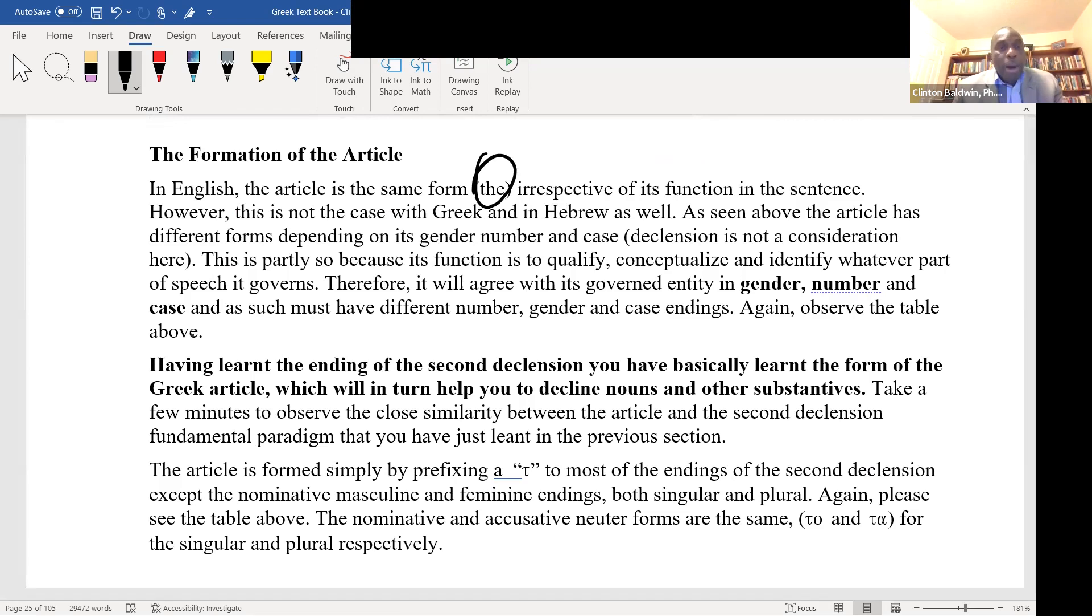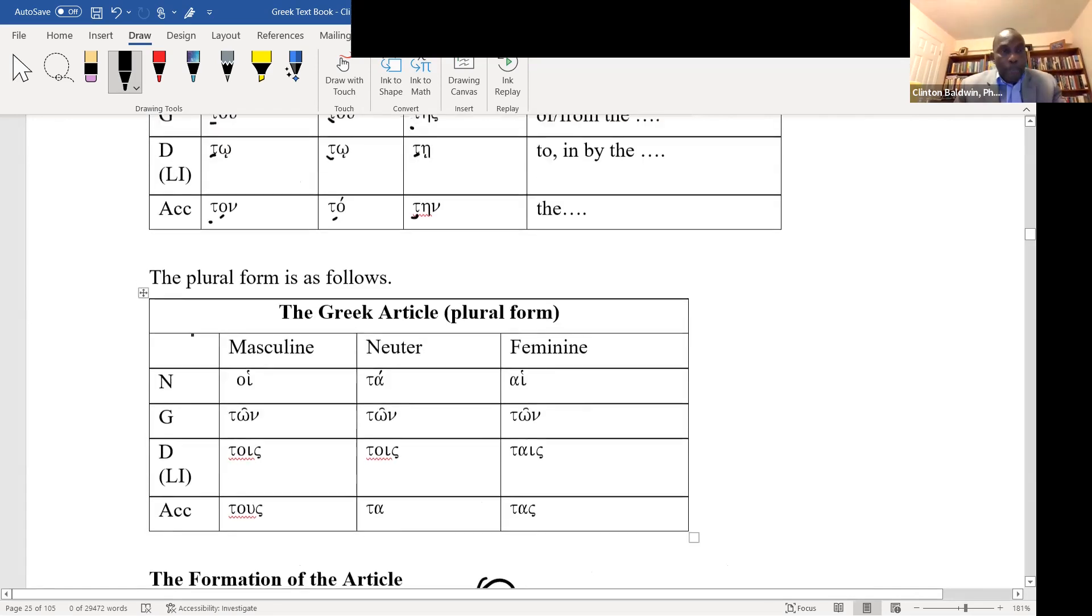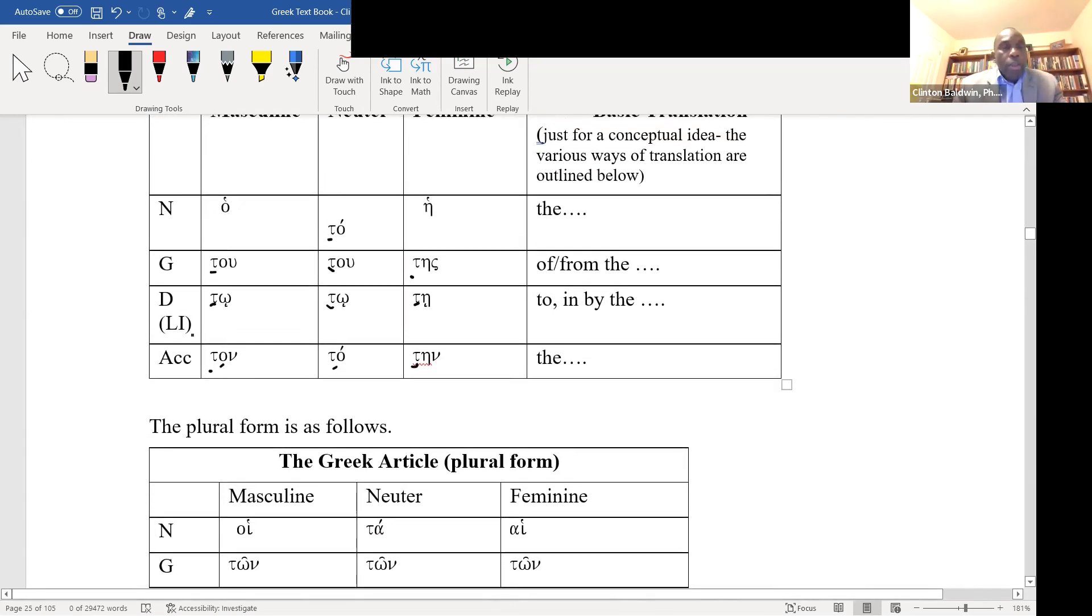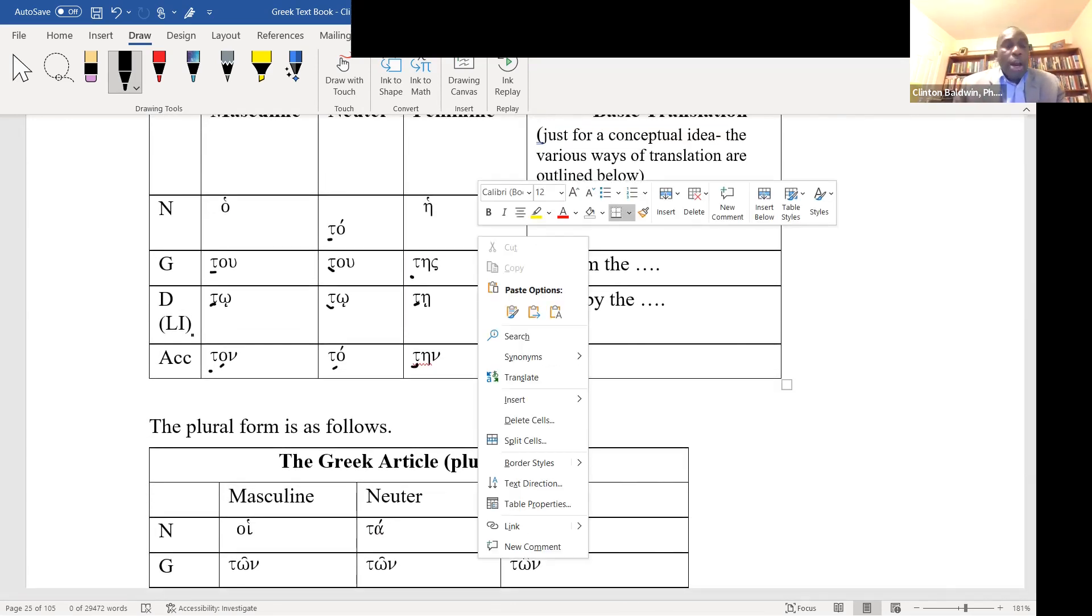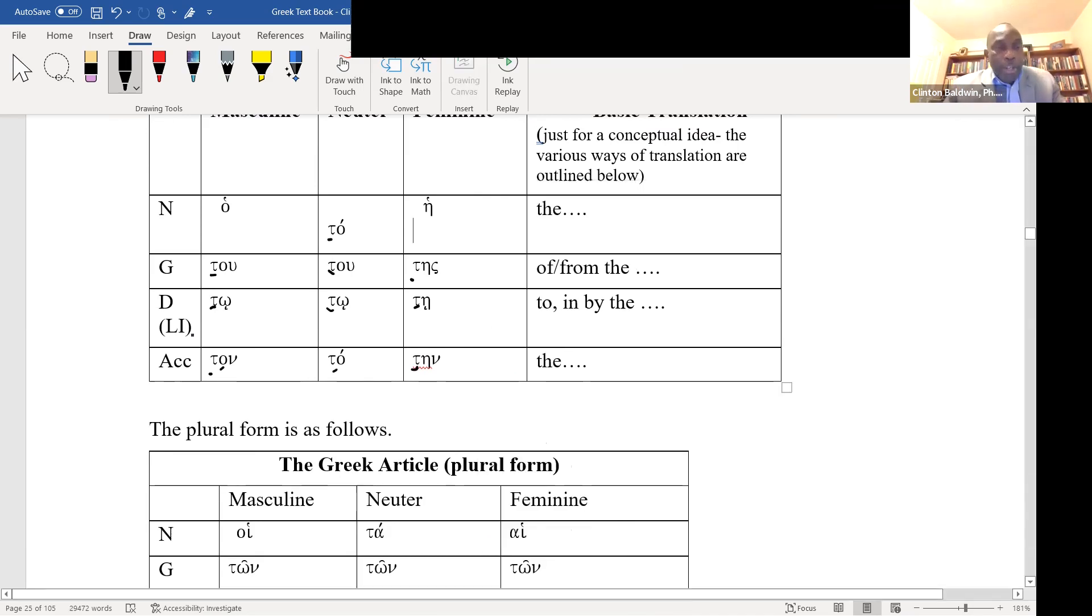The article in English, the article the, has the same form irrespective of its function in the sentence. However, this is not the case in Greek or Hebrew. As seen above, the article has different forms depending on its gender, number, and case. This is partly because its function is to qualify, conceptualize, or identify whatever part of speech it governs.